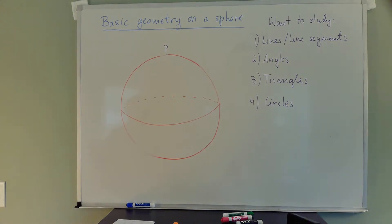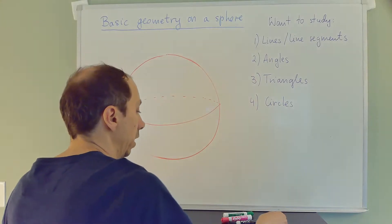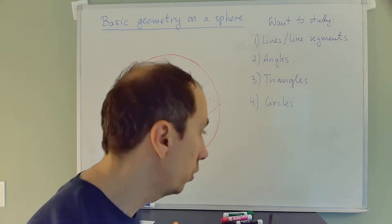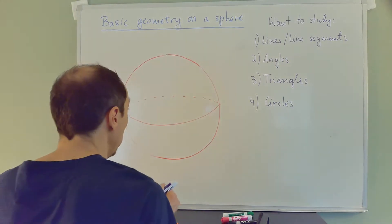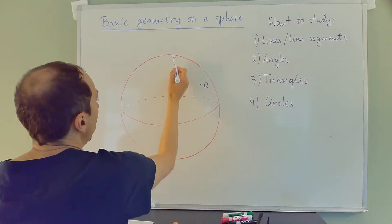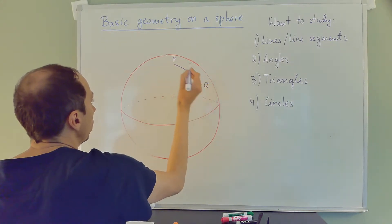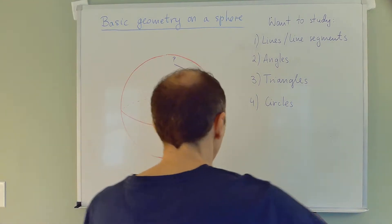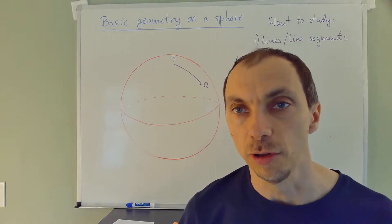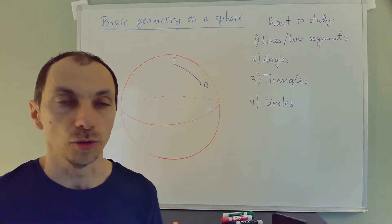So let's begin with lines and line segments. We discussed already that a substitute for a line or a line segment is a geodesic between two points. So if I take two points P and Q on the sphere, a geodesic between them is part of a great circle that connects them. This is not just any curvy line between P and Q — it's a particular unique line that is part of a great circle that goes through P and Q.